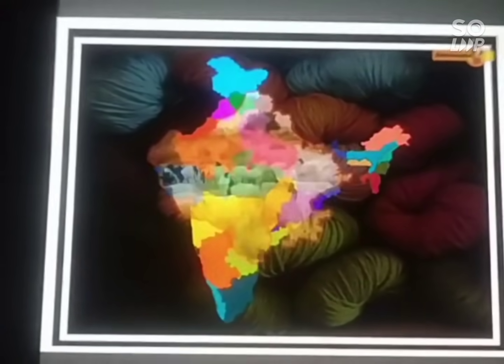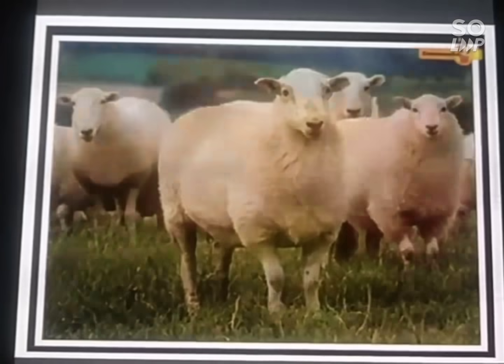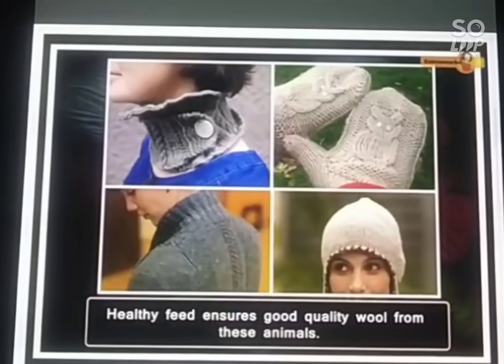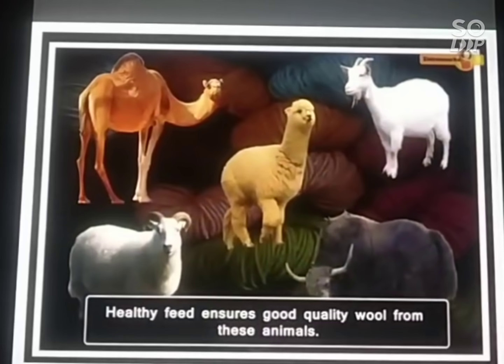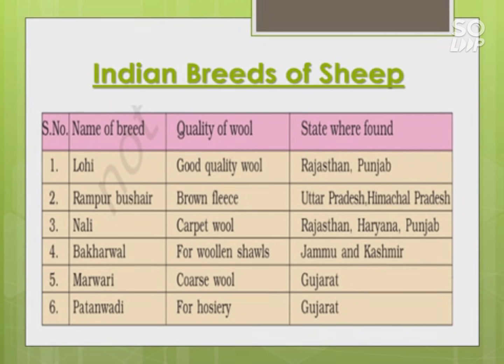Sheep rearing is also done in the plains of Punjab, Rajasthan, and Gujarat. Sheep are herbivores and prefer grass and leaves; they are also fed a mixture of pulses, corn, and jowar. Healthy feed ensures good quality wool. Some Indian breeds of sheep include Lohi from Rajasthan, Rampur brown fleece from Uttar Pradesh, and Nali, Bakharwal, Marware, and Patanwadi - all of which produce good quality wool.